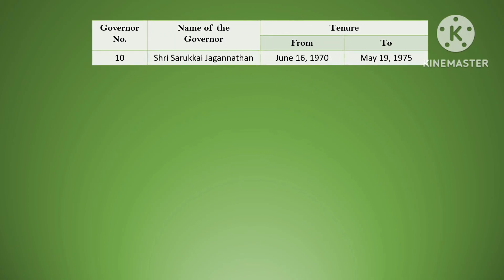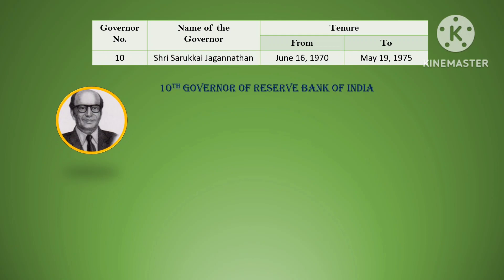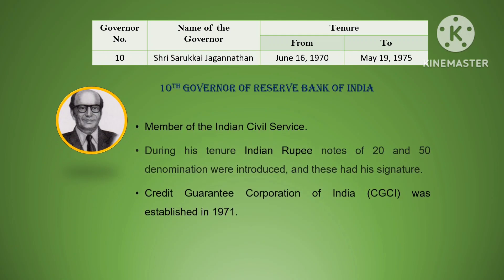The tenth governor was Sri Sarrukai Jagannathan. His tenure was from June 16, 1970 to May 19, 1975. He was a member of the Indian Civil Service. During his tenure, Indian rupee notes of 20 and 50 denominations were introduced bearing his signature. The Credit Guarantee Corporation of India was also established in 1971 during his tenure.